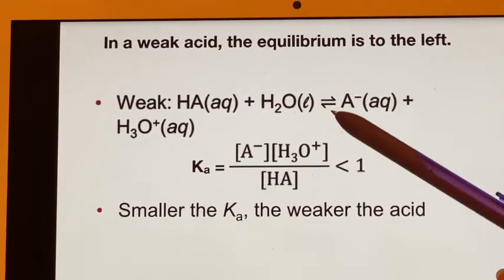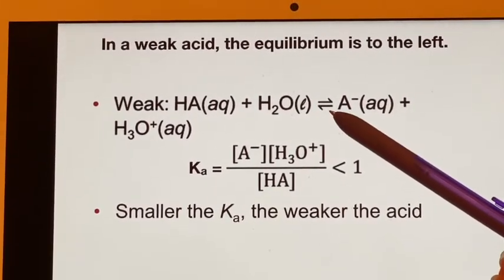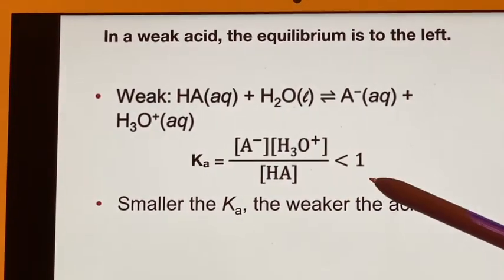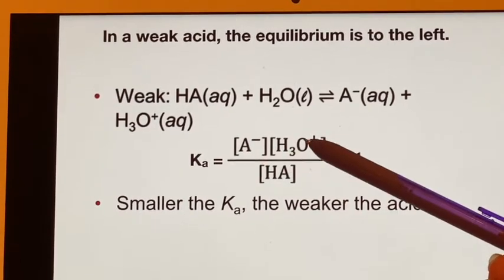And a weak acid, the equilibrium, and it really isn't an equilibrium, is to the left. Ka is going to be less than one, which means that not many of these form.